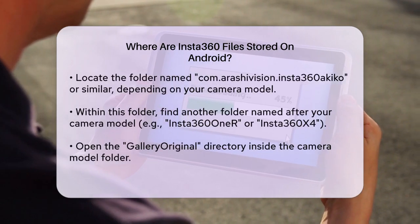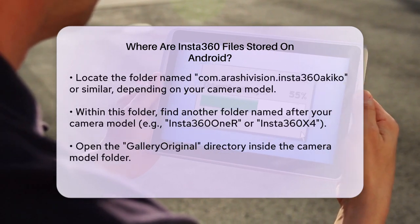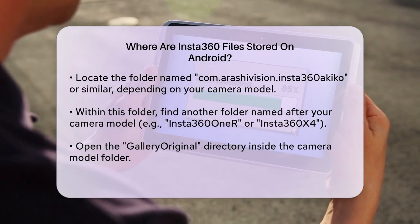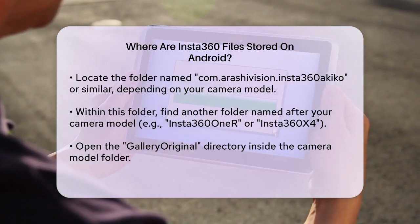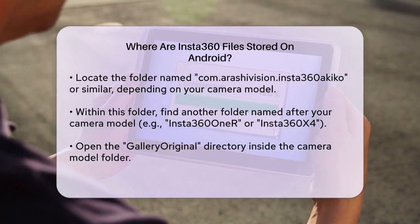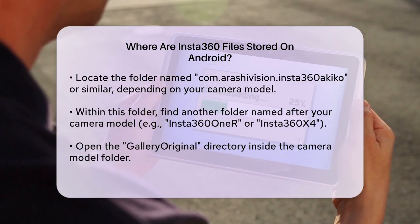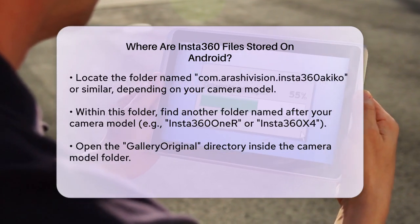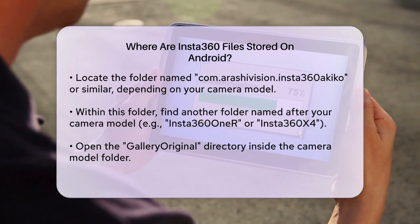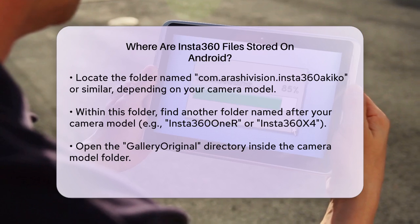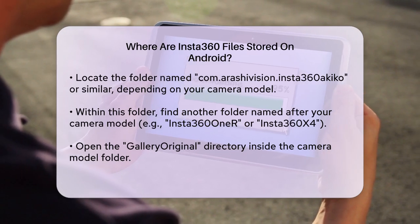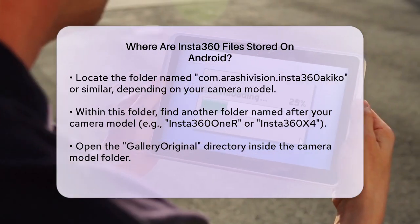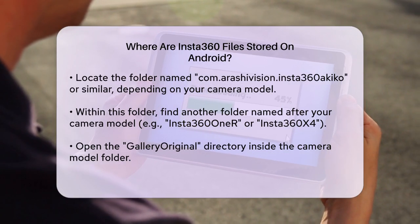Inside this folder, you'll find another folder named after your camera model, such as Insta360 One R or Insta360 X4. Open this folder to find the Gallery Original directory. Within Gallery Original, you'll see a folder named after your camera model again, followed by Camera Zero One. This is where all your Insta360 files are stored.